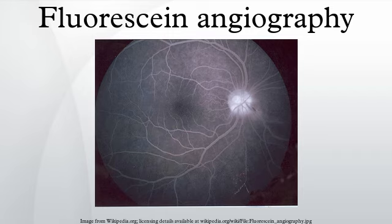Pathologic findings are recognized by the detection of either hyperfluorescence or hypofluorescence. Causes of hyperfluorescence include window transmission defects, leaking defects, pooling defects, staining, and abnormal vasculature. Causes of hypofluorescence include blocking defects and filling defects. Fluorescein angiography is used by physicians specializing in eye disease to evaluate the vasculature of the retina, choroid, optic disc, and iris.